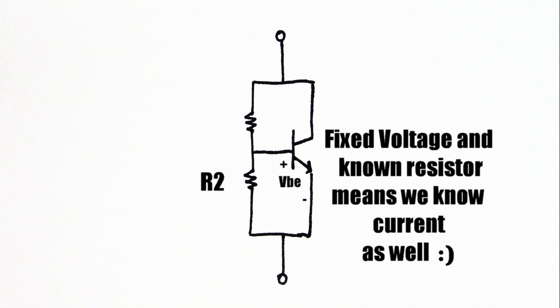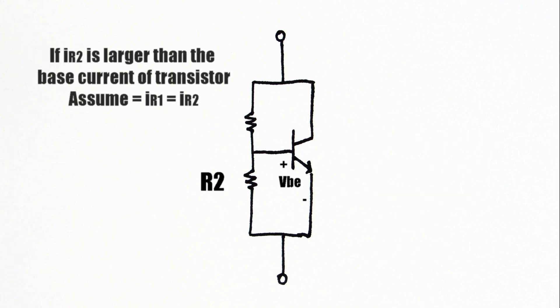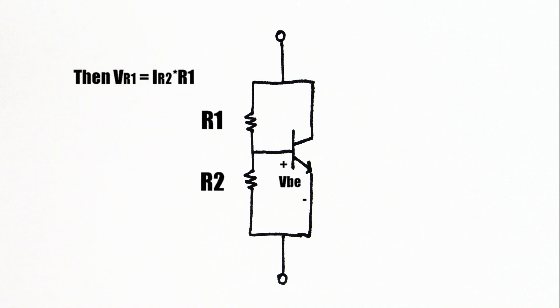If the current going through R2 is large enough, we can assume it's equal to the current going through R1. A rule of thumb to determine if it's large enough is that it's about 10 times the current going into the base of the transistor. This simplifies our analysis and in most cases is a good enough assumption.